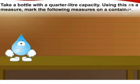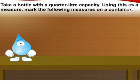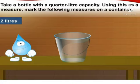take a bottle with a quarter litre capacity. Using this as a measure, mark the following measures on a container. Now children, here we will take a container, a bucket and take one quarter litre bottle, fill water to its brim. First we need 2 litres of water in a container. So children, how many times will you pour a quarter litre bottle in a container to make 2 litres?